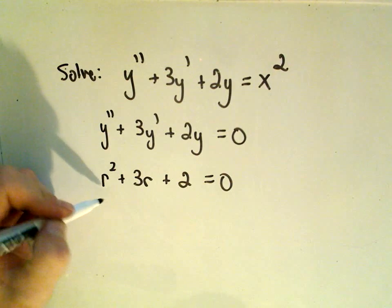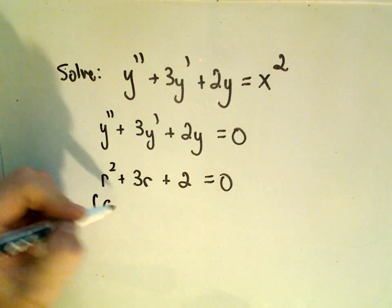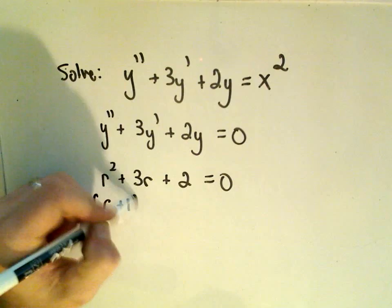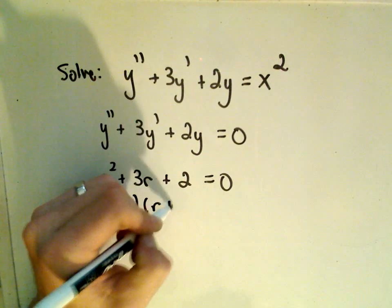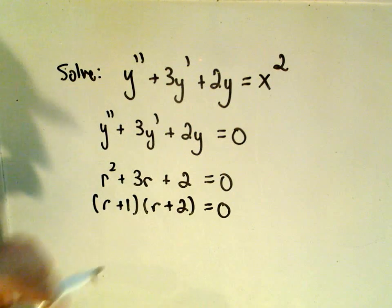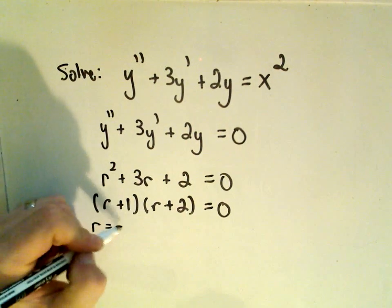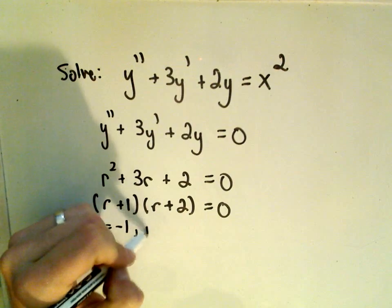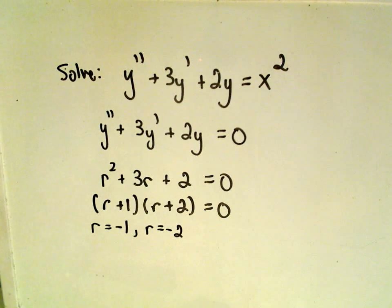Okay, so I think this is going to factor relatively easily. Looks like we'll just get r plus 1 times r plus 2 equals 0. So that means our solutions are going to be r equals negative 1, and also r equals negative 2.